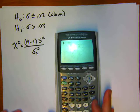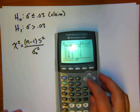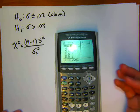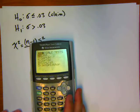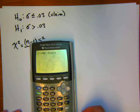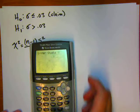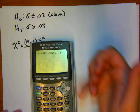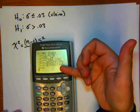On a TI-84, go into your stat menu, then edit. Under your first list, if you have data there, highlight the list name and hit clear, enter. Type in all eight data points. Then click stat, arrow over to calc, and choose one-var stats. Tell it what list your data is in — second, then the number one key. Hit enter. We need the Sx, the sample standard deviation, and the sample size n.